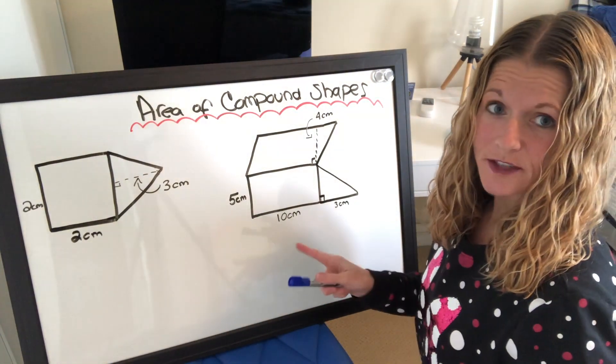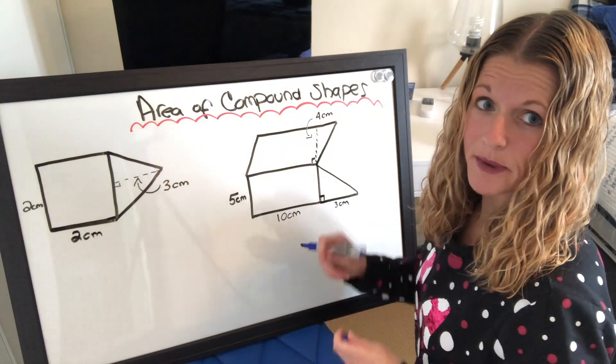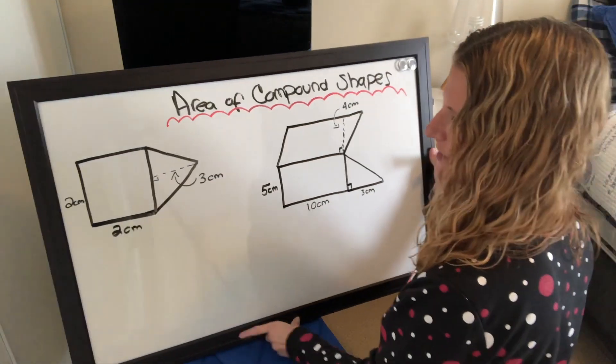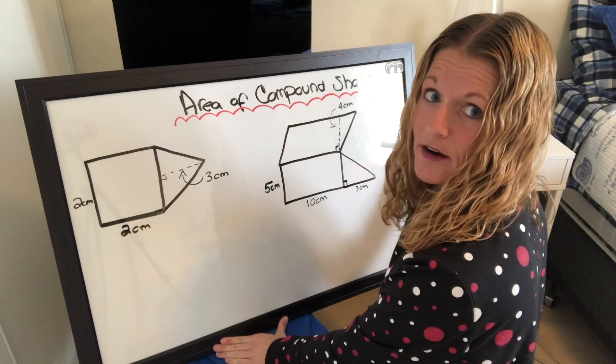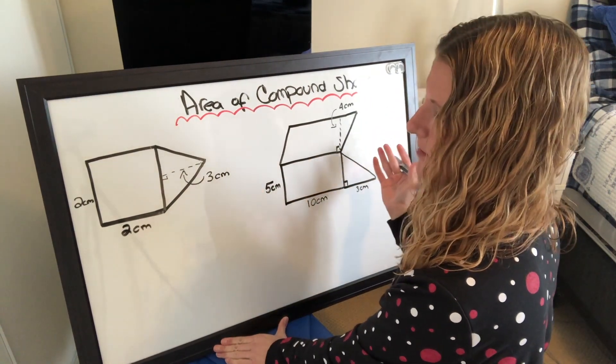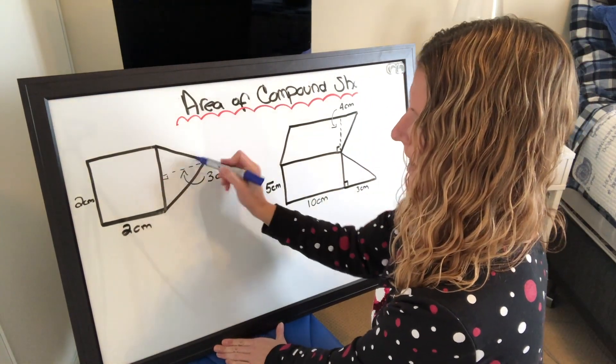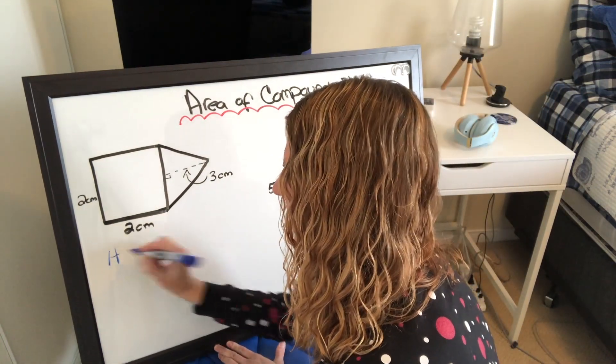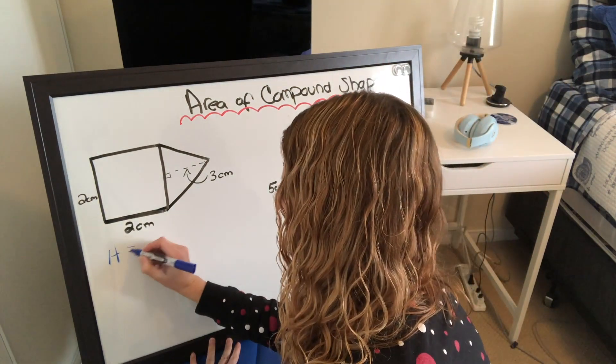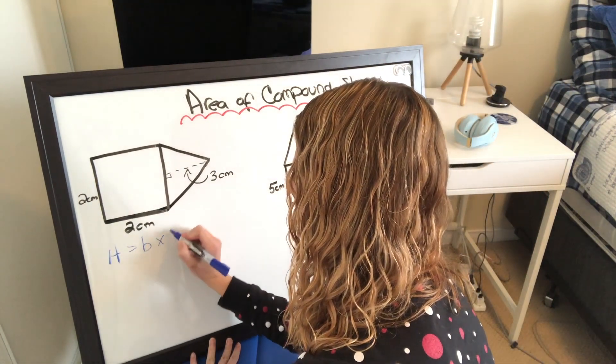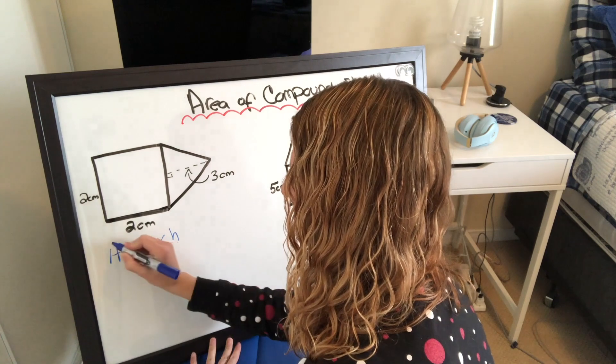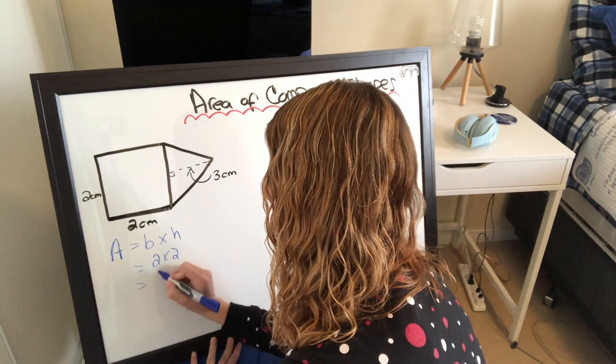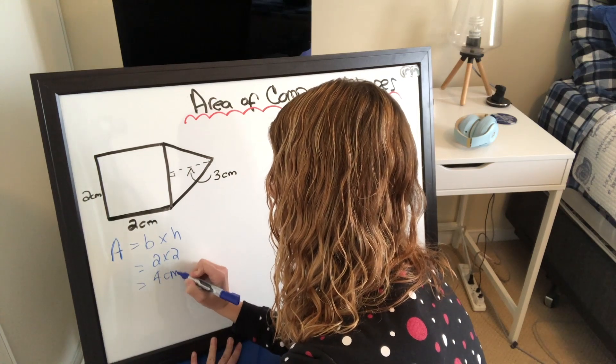Okay guys, we are going to solve the area of these compound shapes together. So the first one as you can see is a square and a triangle. So we break them up. So we've got the square here and the triangle here. So area of the square, we'll do the square first, equals base times height. So that is 2 times 2 equals 4 centimeters squared.